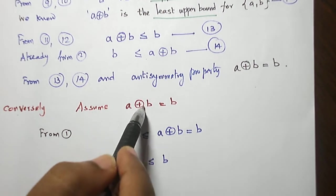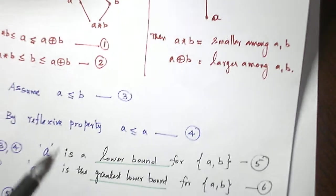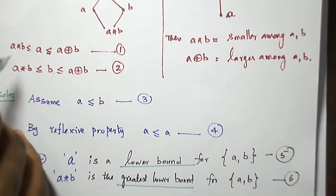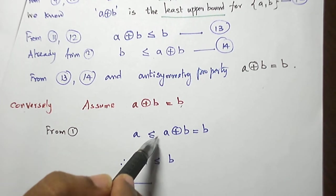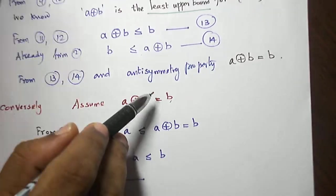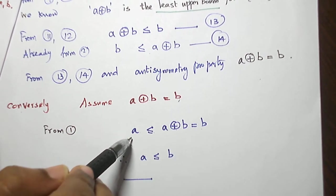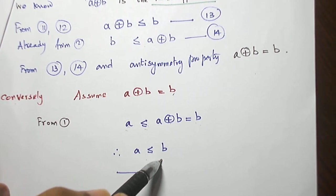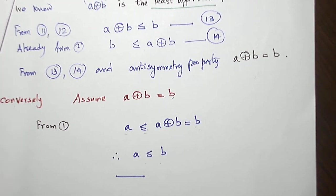Conversely, assume A∨B = B. From equation 1 we have A ≤ A∨B. Since A∨B = B, naturally A ≤ B is obvious. So we have proved the converse part as well.